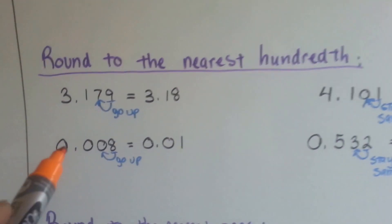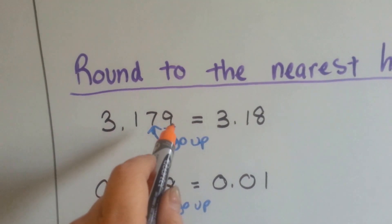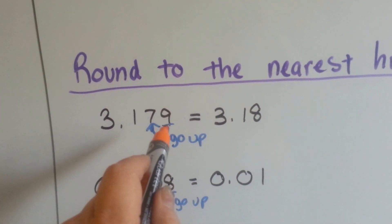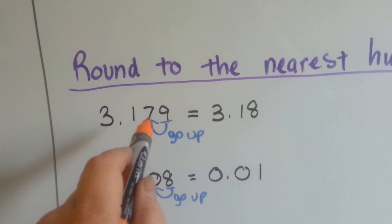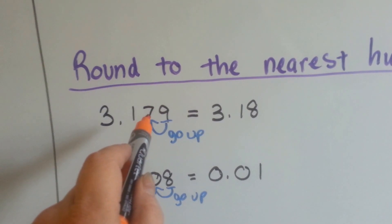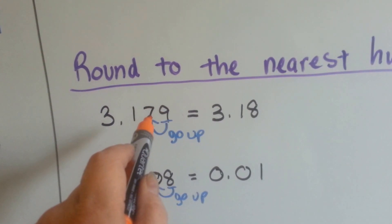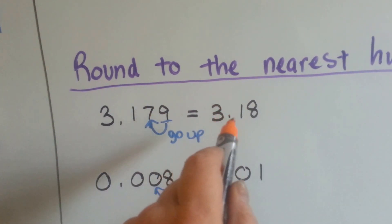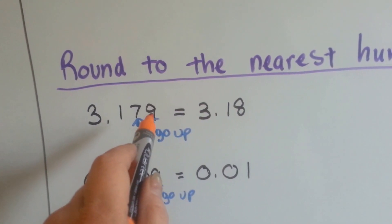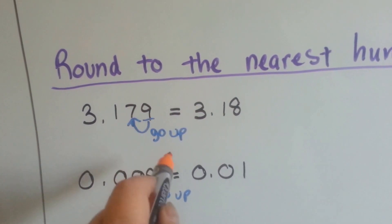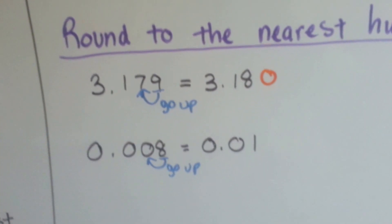So if we're going to round to the nearest hundredth, the nine to the right of the hundredths place is going to tell the seven hundredths what it's supposed to do, and the nine says to go up. So the seven becomes an eight, and now we have three point one eight. The nine turns into a zero or it just drops off — we could have put a zero there if we wanted to.